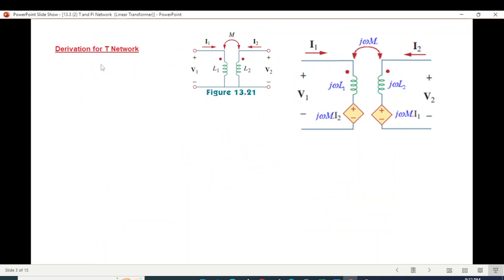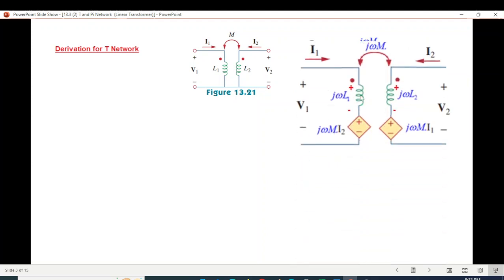So first of all we have to derive some formulas. This is the original network, converting into phasor form we multiply by j omega and we have also incorporated the mutual voltages, which we discussed in earlier lecture. And also we mark the polarity depending on the current direction. Now we are ready to write the KVL equation. For the left loop we write KVL equation: negative V1 plus j omega L1 I1 plus j omega M I2. Rearrange in terms of I1 and I2.